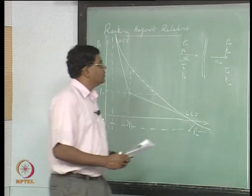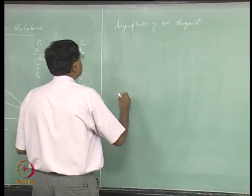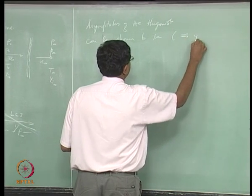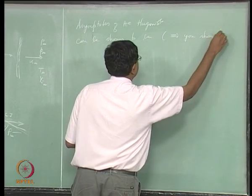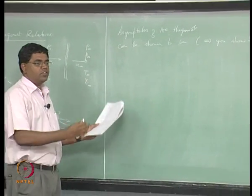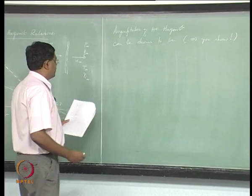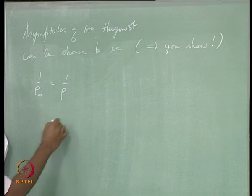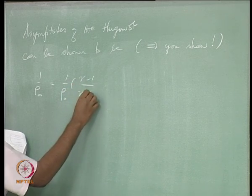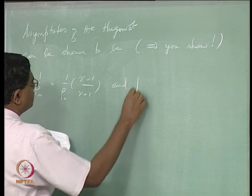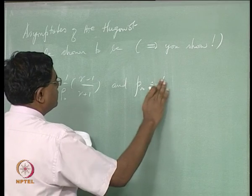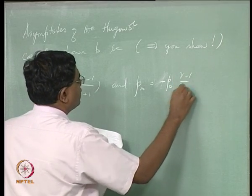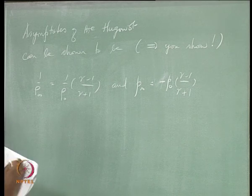This can be shown — and it makes a good exercise, a typical quiz or exam problem — that 1/ρ∞ = (1/ρ₀)(γ−1)/(γ+1) and p∞ = −p₀(γ−1)/(γ+1).